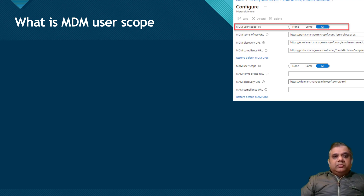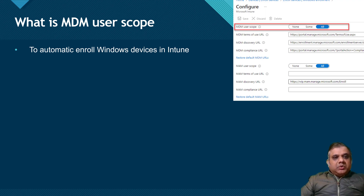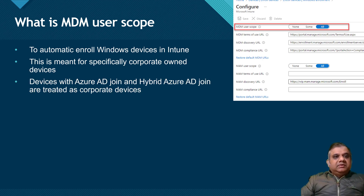When you go to the Endpoint Manager admin center, then Devices > Enroll Devices > Windows Enrollment, you will see the MDM user scope, which has options to set to All, Some, or None. Setting it to All enables the scope for all users; Some is for a specific group. When you enable the MDM user scope, you are automatically enabling devices to enroll into Windows Intune so the device will be completely managed by your organization. This is specifically meant for corporate-owned devices — those joined to Azure AD or hybrid Azure AD joined.